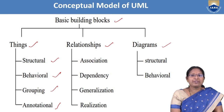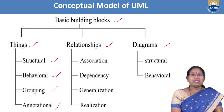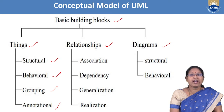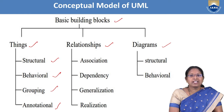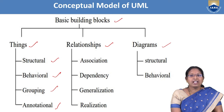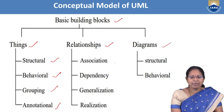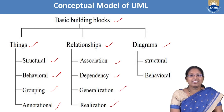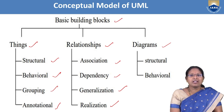Relationships are also one of the basic building blocks of UML. Without relationships, things, and diagrams, we cannot build a model. The kinds of relationships are: association relationship, dependency relationship, generalization relationship, and realization relationship. These are the various kinds of relationships used to build relations among concepts.